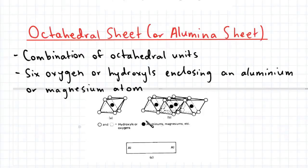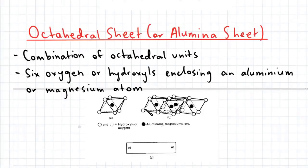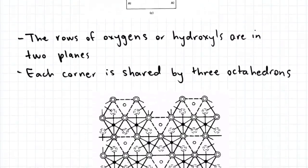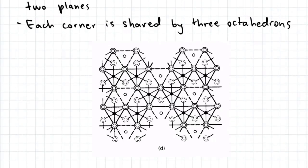Also notice that the rows of oxygens or hydroxyls occur within two planes, and there's an alternating pattern between the oxygen atoms within the two planes — when there are two oxygens in one plane, there's only one oxygen in the other plane. Looking at the top view of the alumina sheet, the black dot represents the aluminium atom and the circles represent the surrounding oxygen atoms. The dotted circles are the oxygen atoms within the plane below. This forms one octahedron.